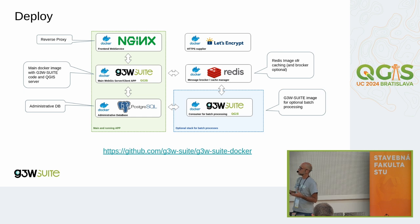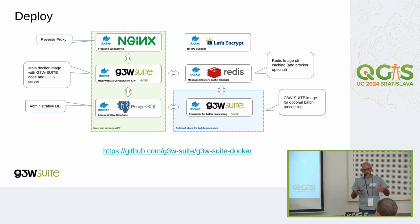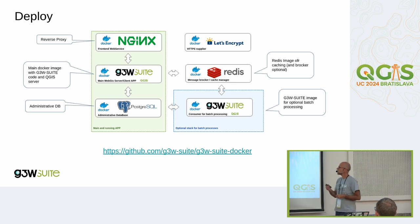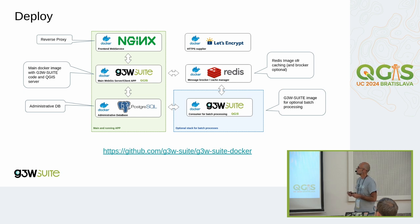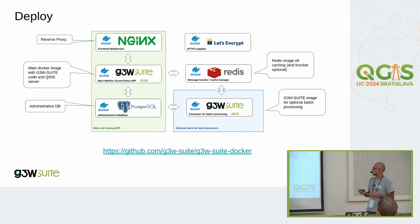With Docker Compose, you have first an nginx server used as a reverse proxy for the G3W-Suite container, which is the main part of the system and contains the G3W-Suite code along with QGIS Server. At the base you have a PostgreSQL/PostGIS database used as administration database and optionally for geodata. On the right you have a Redis instance used as an internal caching system for G3W-Suite and also as a message broker if needed — for example, to activate another G3W-Suite container for batch processing activity.